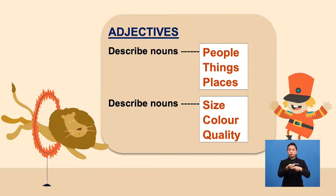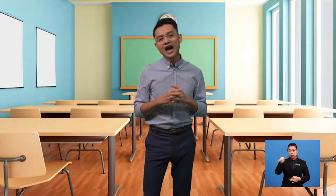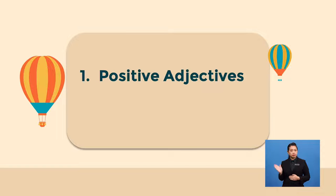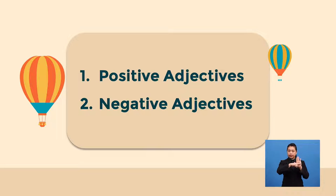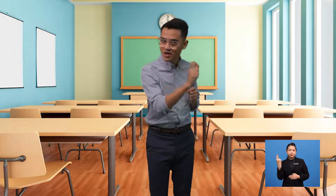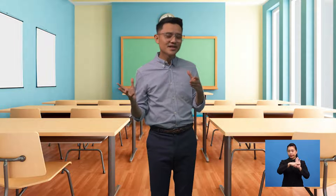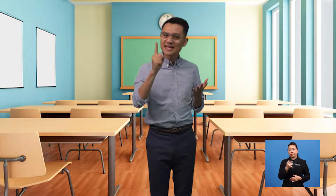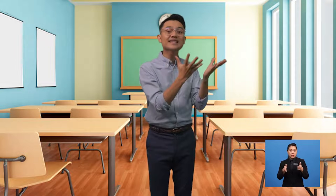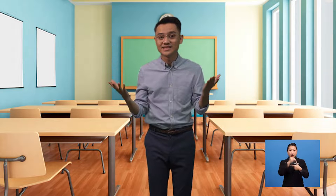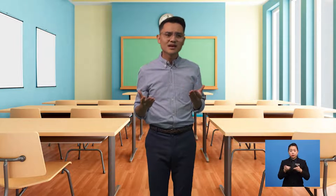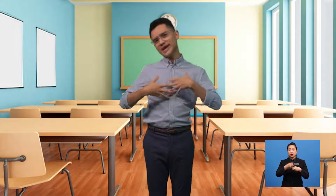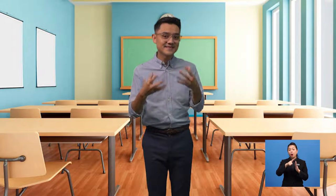There are several types of adjective. I would like to introduce two general categories: positive and negative adjectives. You usually use a positive or negative adjective to describe your feelings about a specific person, place, thing, or idea. Without these describing words, it would be very difficult for you to express how you feel. Now let's learn more about these describing words.